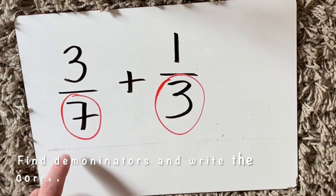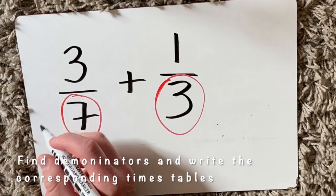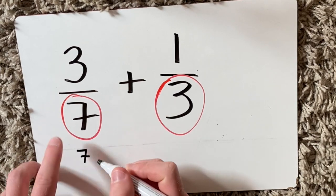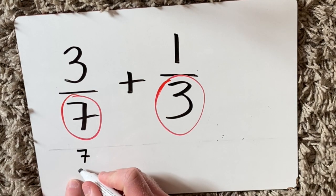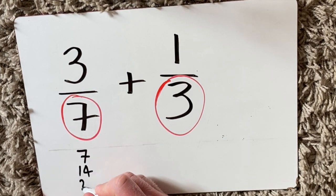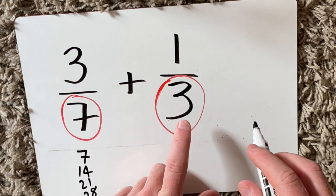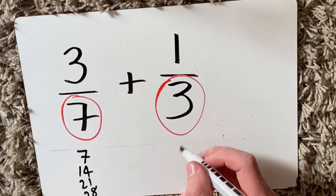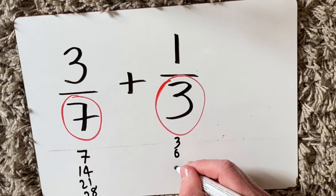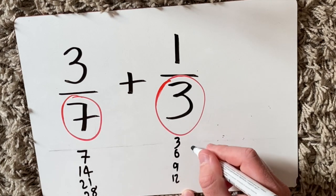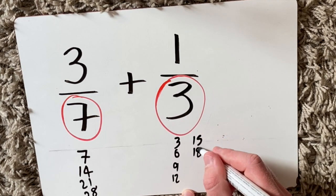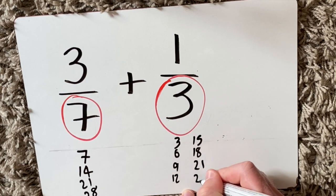What I'm going to do is take a look at the denominator. It's a seven, so I'm going to do the seven times table. This is a three, so I'm going to do the three times table: three, six, nine, twelve, fifteen, eighteen, twenty-one, twenty-four.